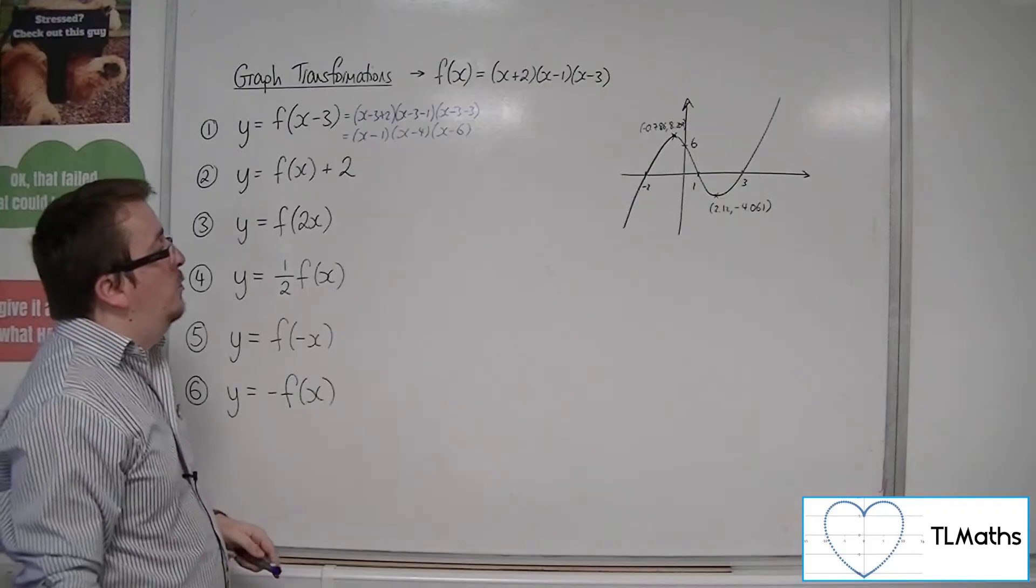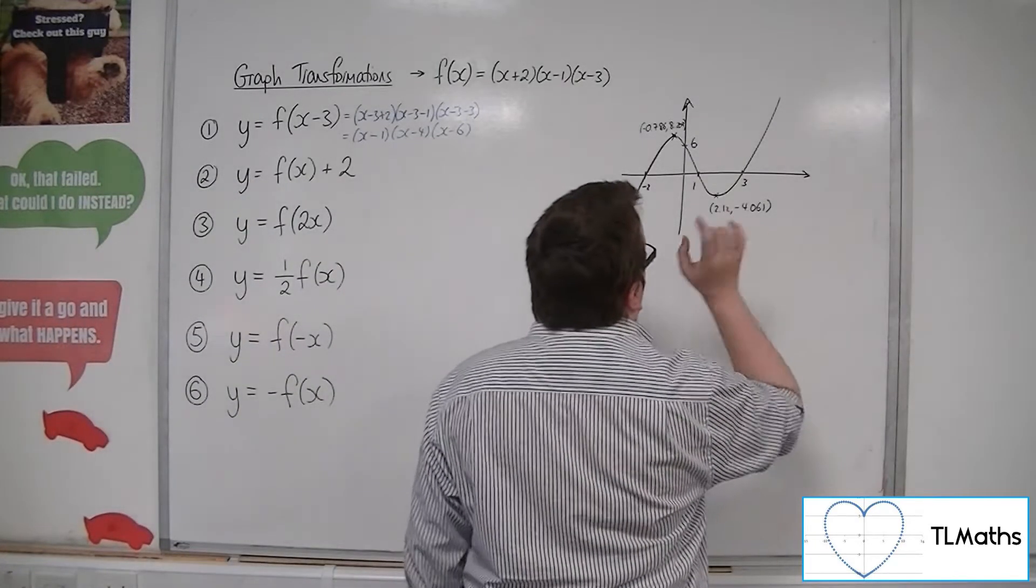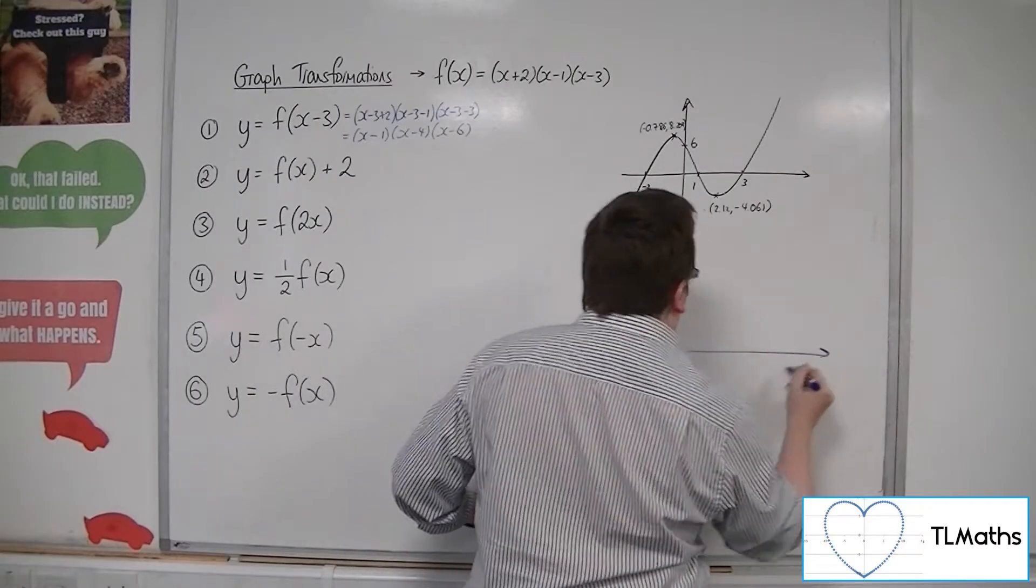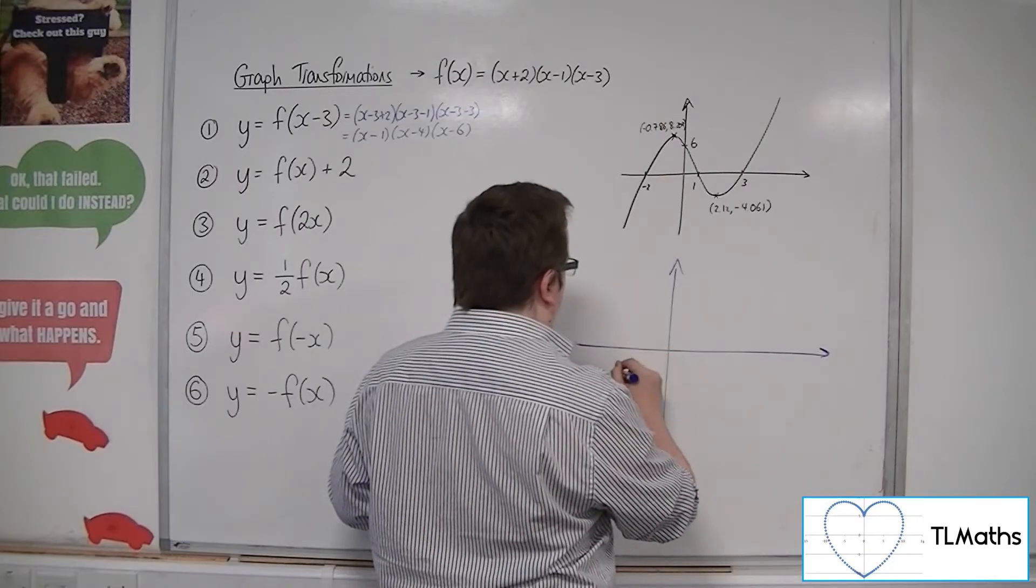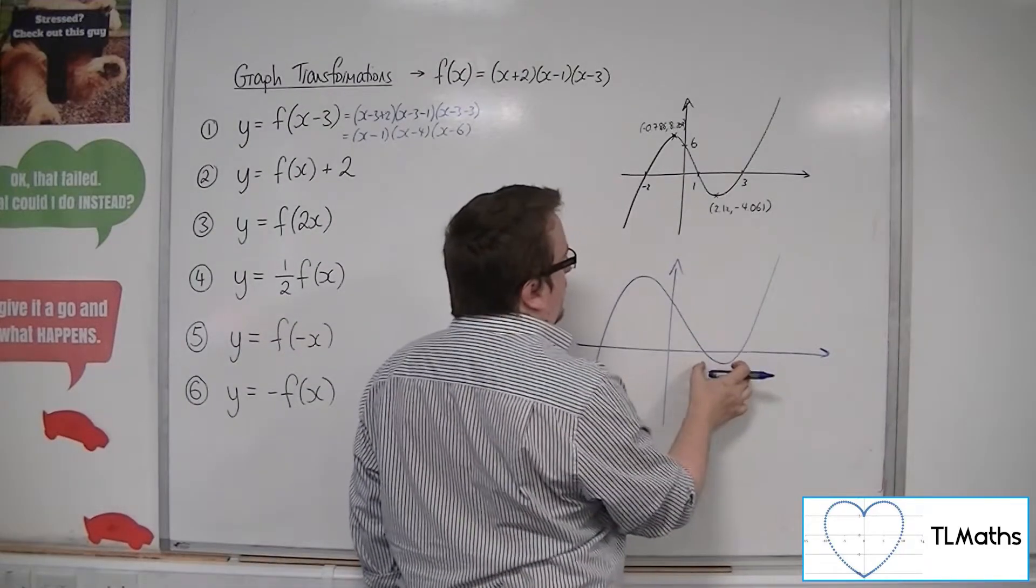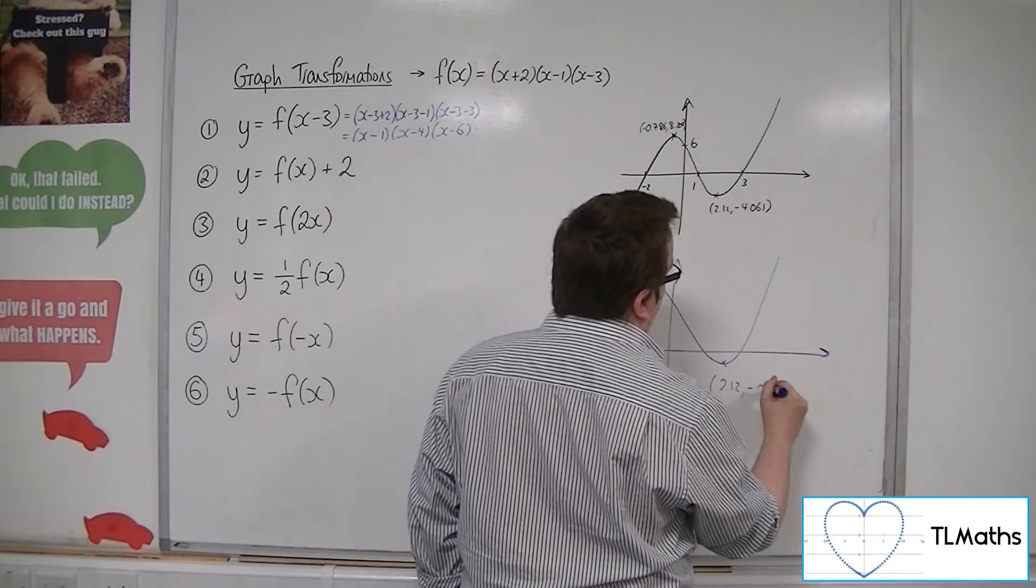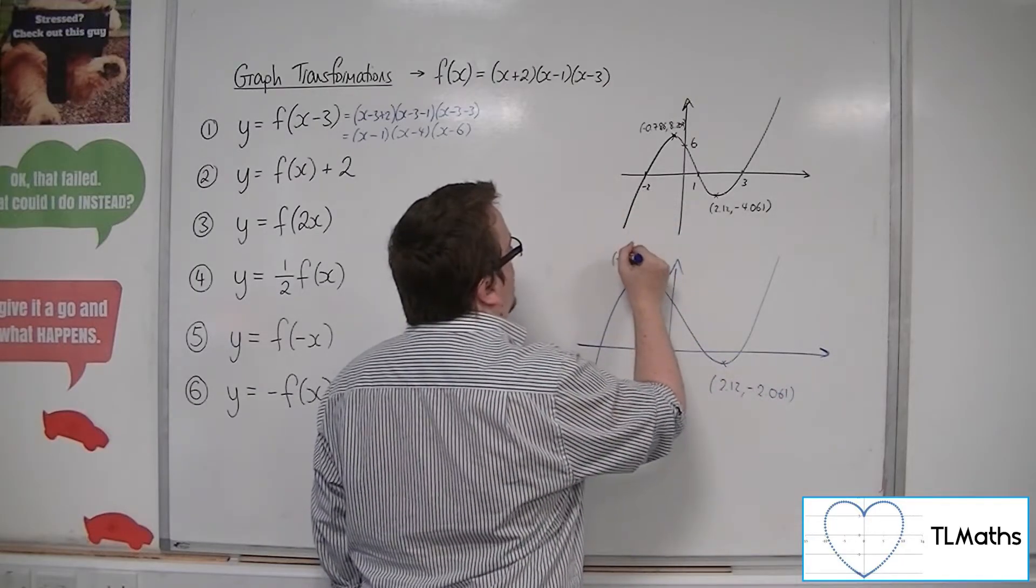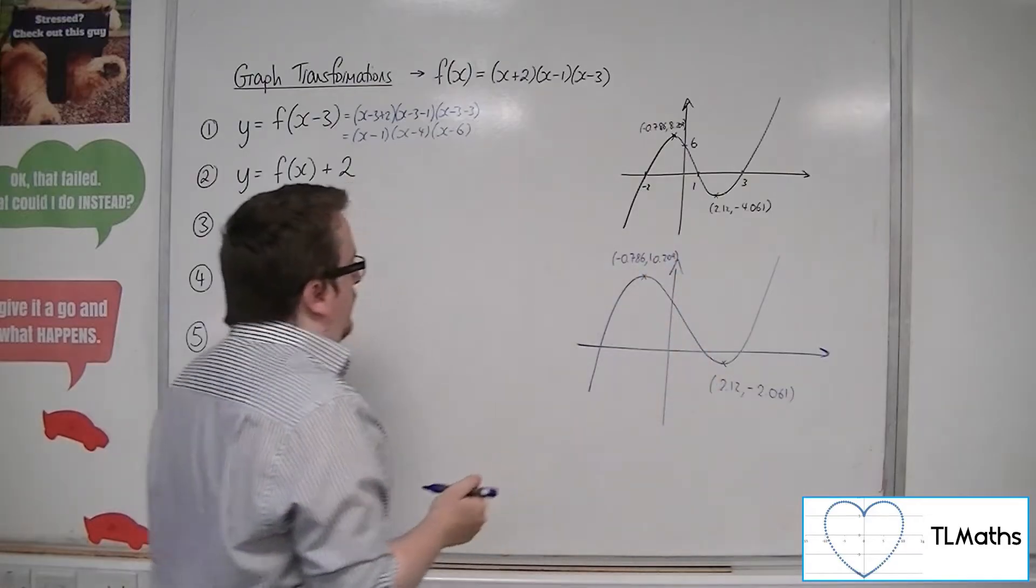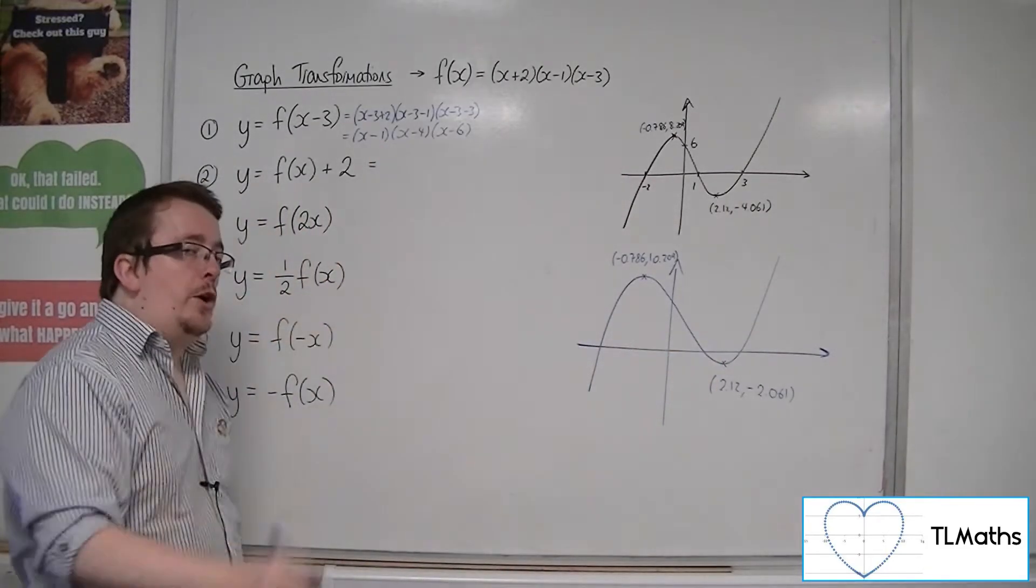Now, if I'm looking at f(x+2), you'll start to see why I put the turning points in, because I need to know whether the turning points are going above or below the x-axis with a translation. So, this new curve will look something like, it will be higher. It won't be so below the x-axis anymore. That point would be (2.12, -2.061) and this point here will be (-0.786, 10.209). So I'll know the minimum and maximum points there.